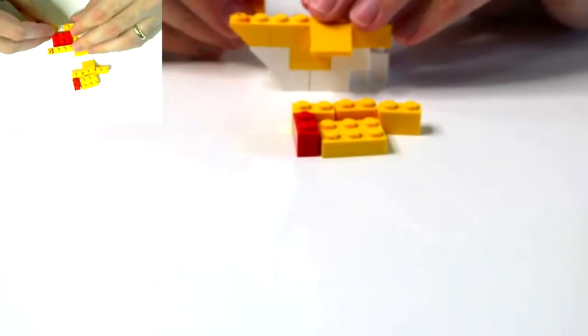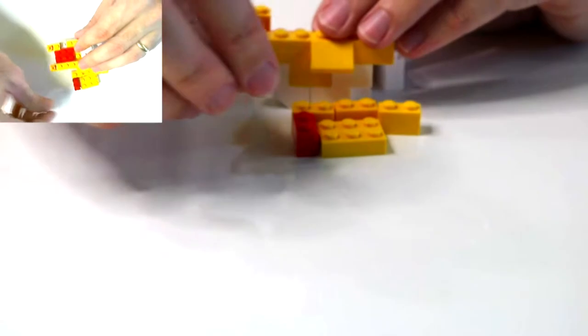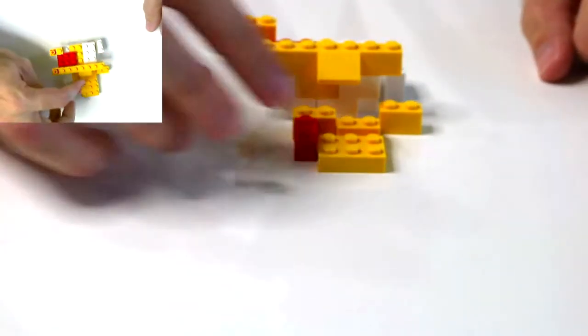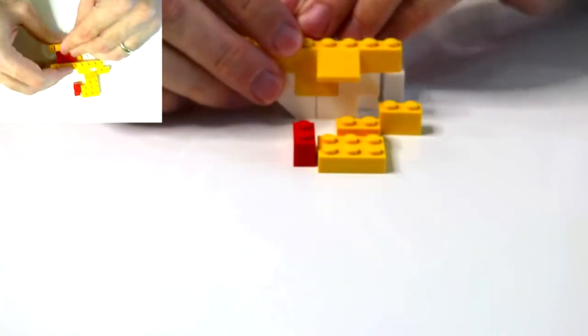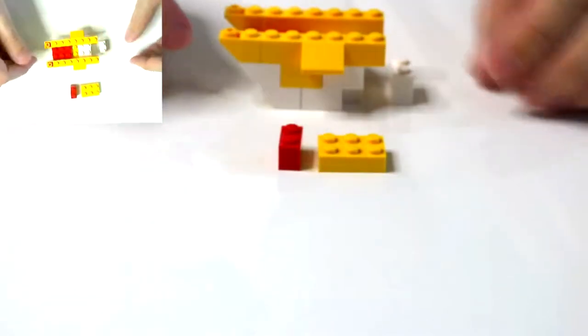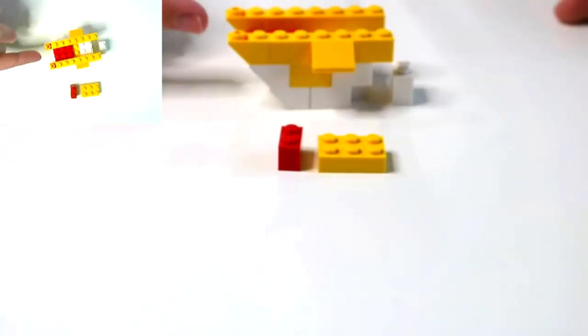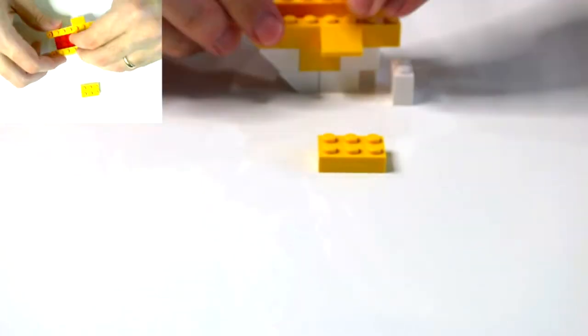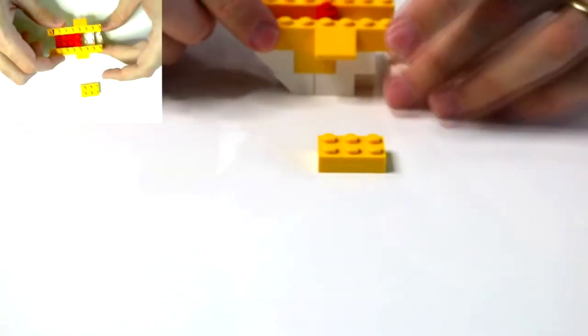Now on the inside, when you're looking into the mouth of the baby shark, I wanted to have something that was more red. So we would do a one by two brick there.